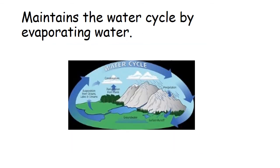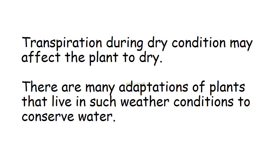Transpiration maintains the water cycle by evaporating water. Therefore, transpiration is a process favorable not only for the plants but also for the environment. Heat, strong wind, and strong light increase the rate of transpiration.